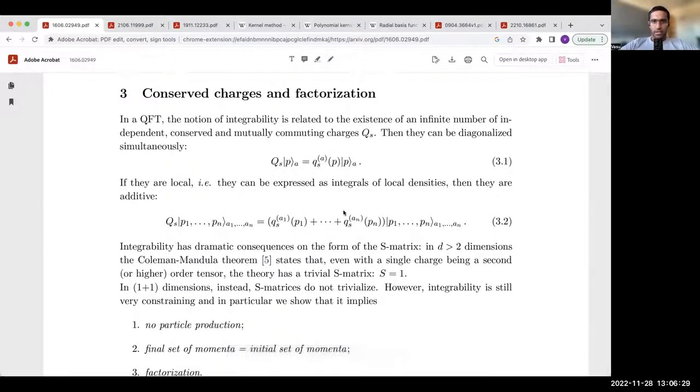I will use these lecture notes by Bombardelli as a starting point to explain where the specific properties of the S matrix of integrable two-dimensional field theories comes from. In two-dimensional integrable field theories, in addition to the conservation of energy momentum, we have conservation laws associated with higher spin charges. These charges are independent, conserved, and mutually commuting.